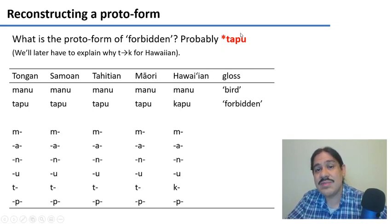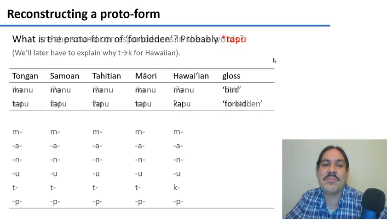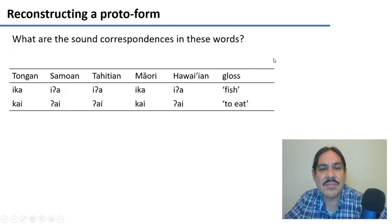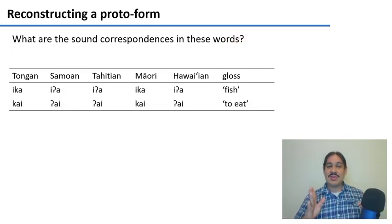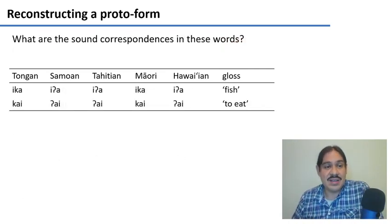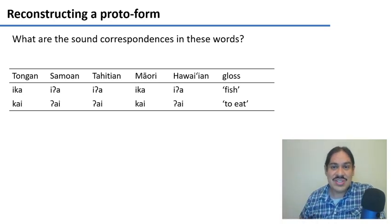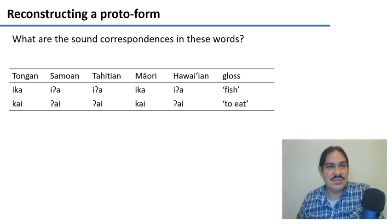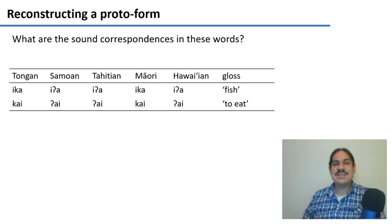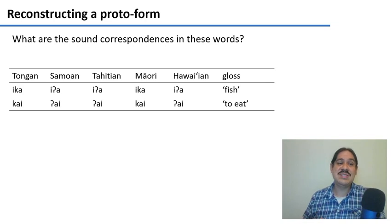Now you give it a try. These are two sets of cognates for fish — the noun 'fish' — and for the verb 'to eat.' Please take a piece of paper and try to figure out what are the sound correspondences in these words. Please pause the video.